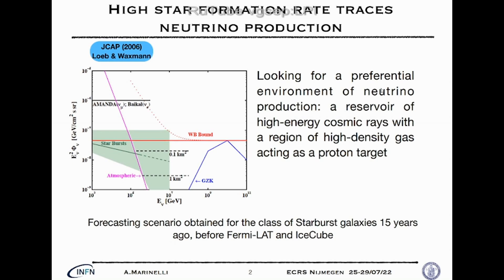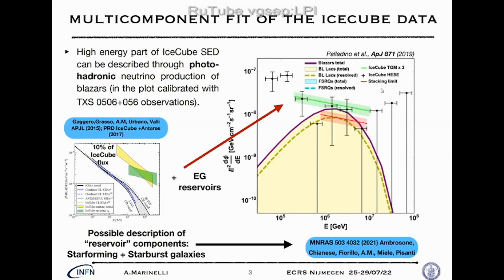In this slide I want to say that, looking at the IceCube diffuse flux, it is possible to fit the energy part of the spectrum. Looking at blazars as accelerators — in this case extrapolating TXS 0506+056 to an entire population of blazars — we see there is room at lower energies for reservoir-type objects.